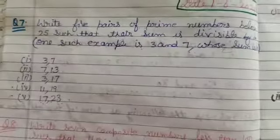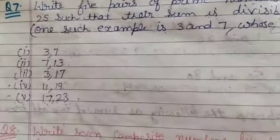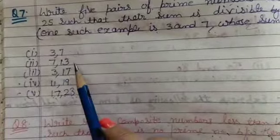Write 5 pairs of prime numbers below 25 such that their sum is divisible by 10. We have 5 pairs of prime numbers which should be small and they should be divided by 10. One such example is 3 and 7, whose sum is 10. 3 plus 7, 10 are 10.